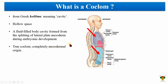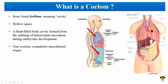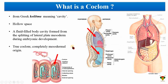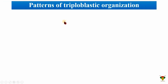A true coelom must be completely mesodermal in origin. We have a diagram showing how organs are present and suspended in the coelom. We also have an example of a true coelom present in earthworms. After the body wall of the earthworm, the space present is known as the coelom — a true coelom — and the organs are suspended in this fluid-filled coelom, which provides a hydrostatic skeleton to the earthworm.